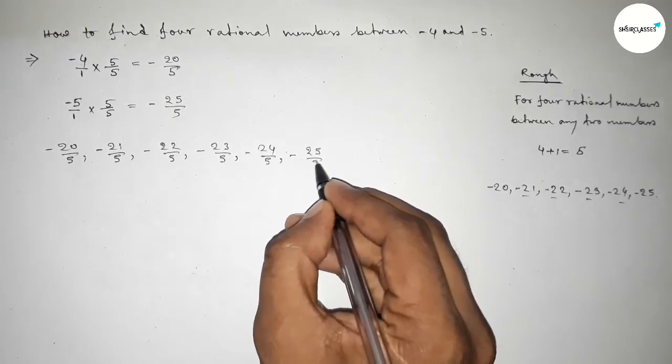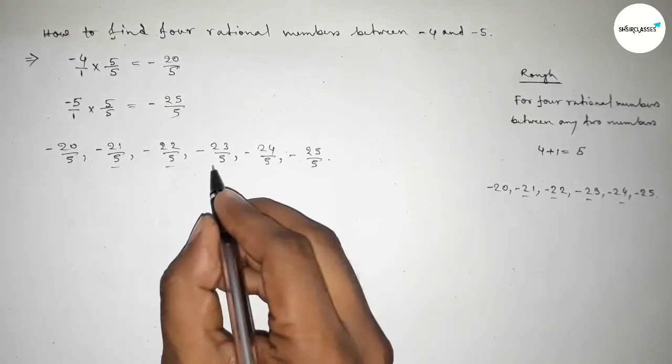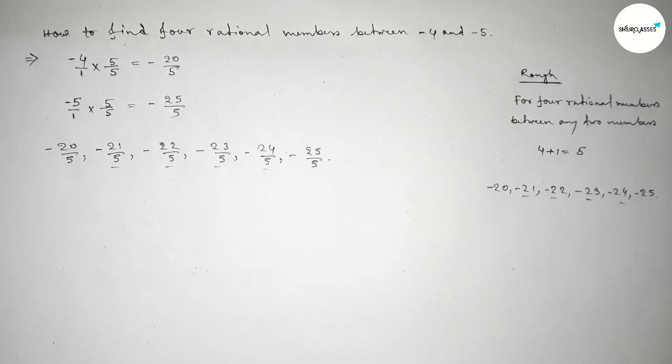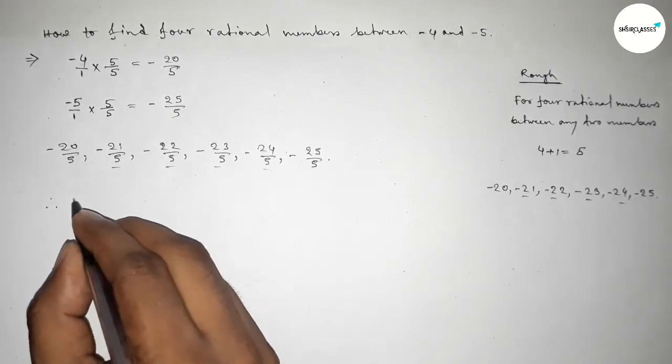minus twenty-five over five. And among these, these are the required four rational numbers between minus four and minus five.